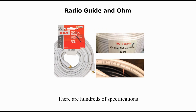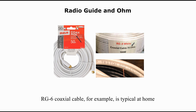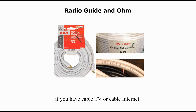There are hundreds of specifications, but most types of coaxial cable use an RG number. RG stands for radio guide. Each type serves different purposes. RG-6 coaxial cable, for example, is typical at home if you have cable TV or cable internet.